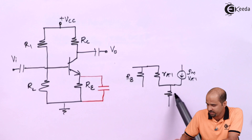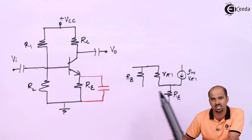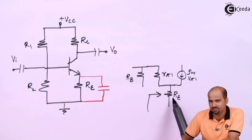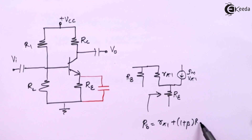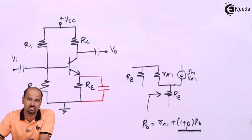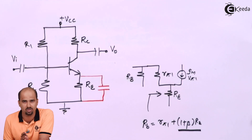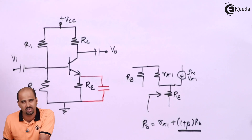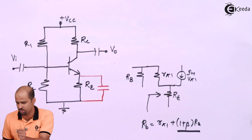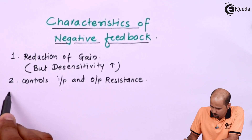So this RE, if the capacitor is not there and it comes into picture, what will be the effect on the input-side resistance? Obviously, the input resistance will get increased. If RE shifts towards the base side, we get RB equal to R-pi-1 plus (1 + beta) times RE. So that factor leads to increase the input resistance. This is how RE is your feedback circuit and it leads to change your input resistance. Obviously, the output resistance also gets affected. So negative feedback is important to control input as well as output resistance.